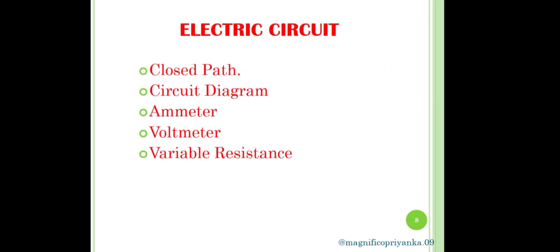Next is electric circuit. It is a continuous and closed path through which electric current flows. It contains different components like cell or battery, plug key, wires, and electric components such as ammeter, voltmeter, bulb, etc.